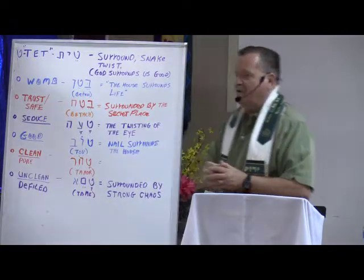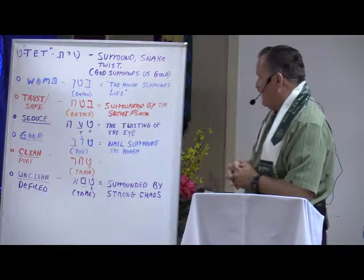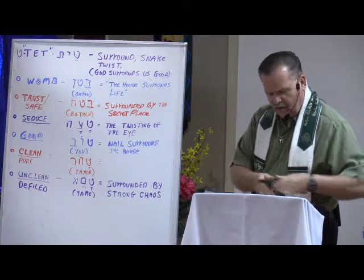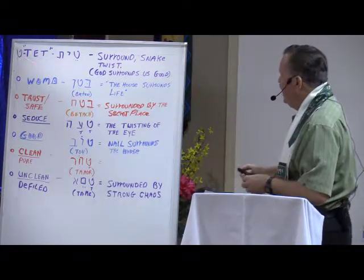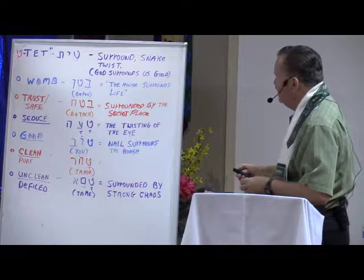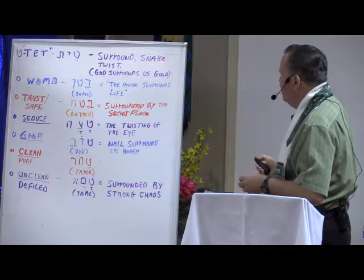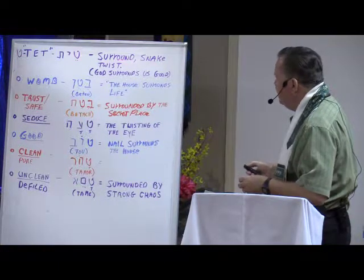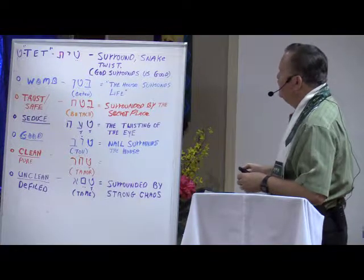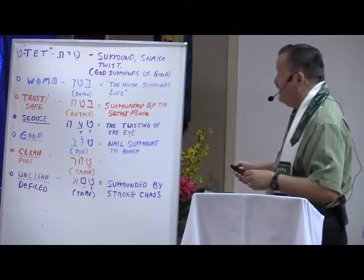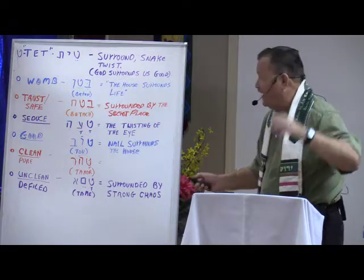Today we're looking at the letter tet. You'll see here on the board at the top the letter tet — this symbol. It means surround, or snake, or twist. This is how you spell tet, and I think that's quite interesting because it reveals something about all the Hebrew letters.